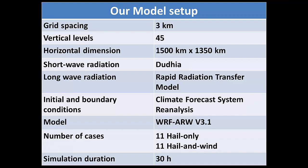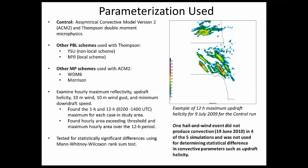We did 11 hail-only and 11 hail-and-wind cases. All simulations started at 12Z the morning before the convection and ran for 30 hours, through 18Z the next day. The time we focused on is between 2Z and 14Z. The parameterizations we used: our control run used the ACM2 PBL scheme — a hybrid between local and non-local — with Thompson double-moment microphysics. We varied each by keeping the control boundary layer scheme and changing the microphysics to WDM6 and Morrison. We also used Thompson double-moment microphysics with the YSU and MYJ PBL schemes, which are the same ones used in the SSEO.